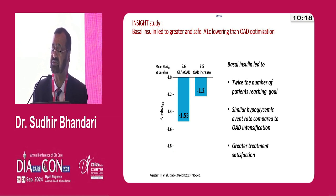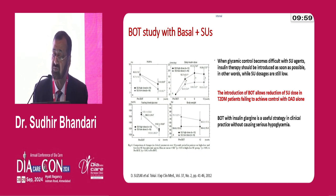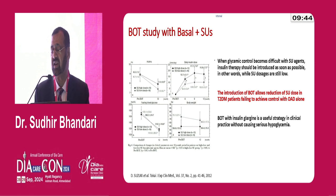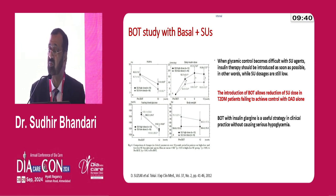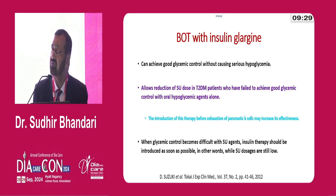Many patients come back and say: 'Sir, why didn't you insist I start basal insulin earlier? I have such a sense of well-being and the fatigue is totally gone.' The basal-supported oral therapy study is a wonderful example with patients on sulfonylurea. Introduction of basal allows reduction of sulfonylurea doses, and patients feel they are achieving better control. This basal-supported oral therapy with insulin glargine is a useful strategy in clinical practice without causing serious hypoglycemia, and sometimes you get a chance to reduce the sulfonylurea when you combine basal insulin.